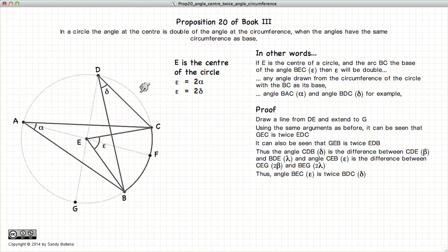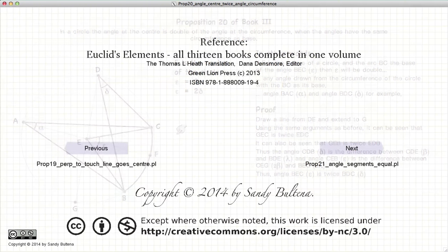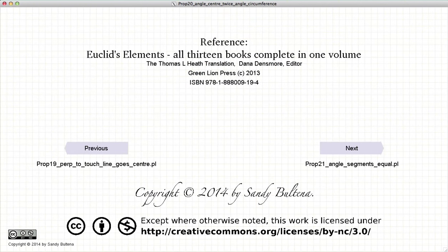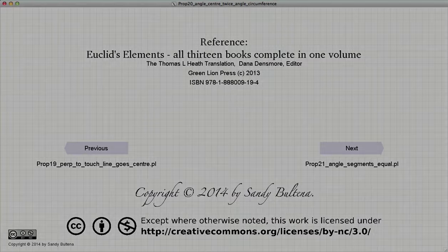And so thus we have demonstrated that if we have a shared base BC, any angle from the circumference of the circle will be half the angle from the center of the circle. And that concludes this video presentation. To see the next presentation, just click the next button.